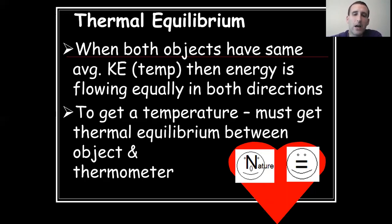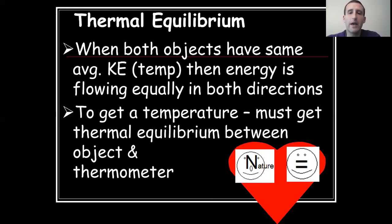Another way to think about thermal equilibrium is a classroom connected to a hallway by two doors. People come in and go out. When the room reaches its capacity relative to the hallway, for every person who comes in, somebody else goes out. It is not that nobody enters or leaves the room — it is that the same number enter and leave, and therefore the number of people in the room stays constant.